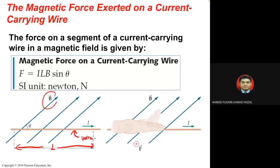For a current-carrying wire, we only have one current involved. The equation is F = iLB, where i is current, L is length, and B is magnetic field — compared to the earlier qvB for moving charges. The full equation is F = iLB sin θ, where θ is the angle between the current direction and the magnetic field. The unit for magnetic force is newton.